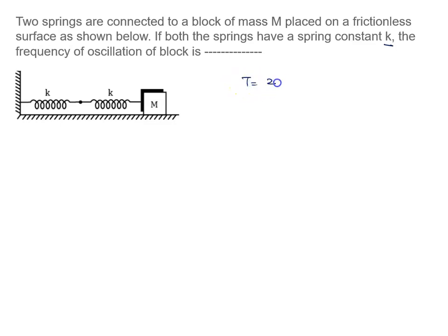Time period is 2π root m by k equivalent. So what is the frequency? 1 upon time period. So it will be 1 upon 2π root k equivalent upon m.